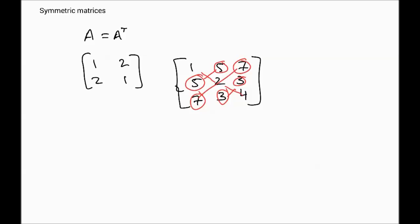Symmetric matrices are those where the transpose of the matrix is the same as the original matrix. You can notice in the examples that if you take the transpose, you end up with the same matrix. The symmetry happens about the diagonal — entries are reflections of each other across it, for example, seven and seven, or three and three. The diagonal itself is the line of symmetry.